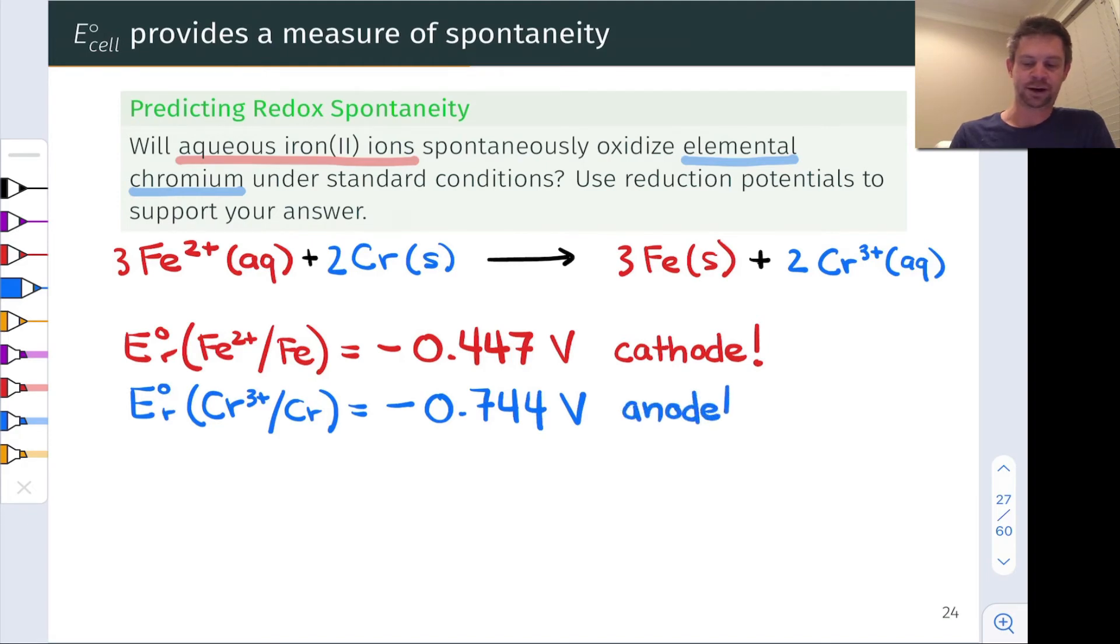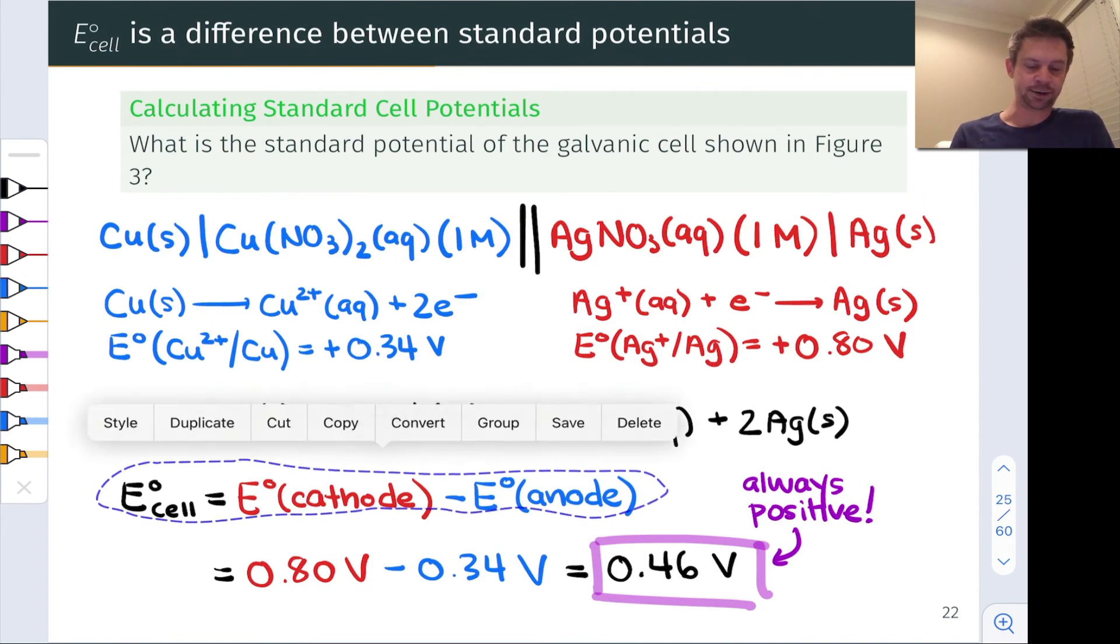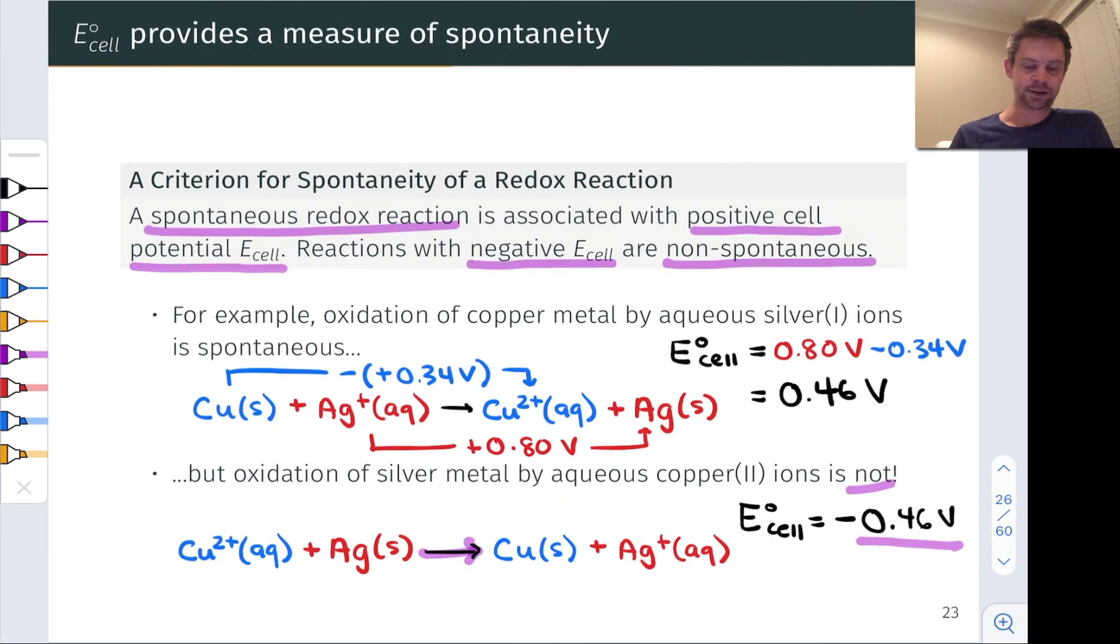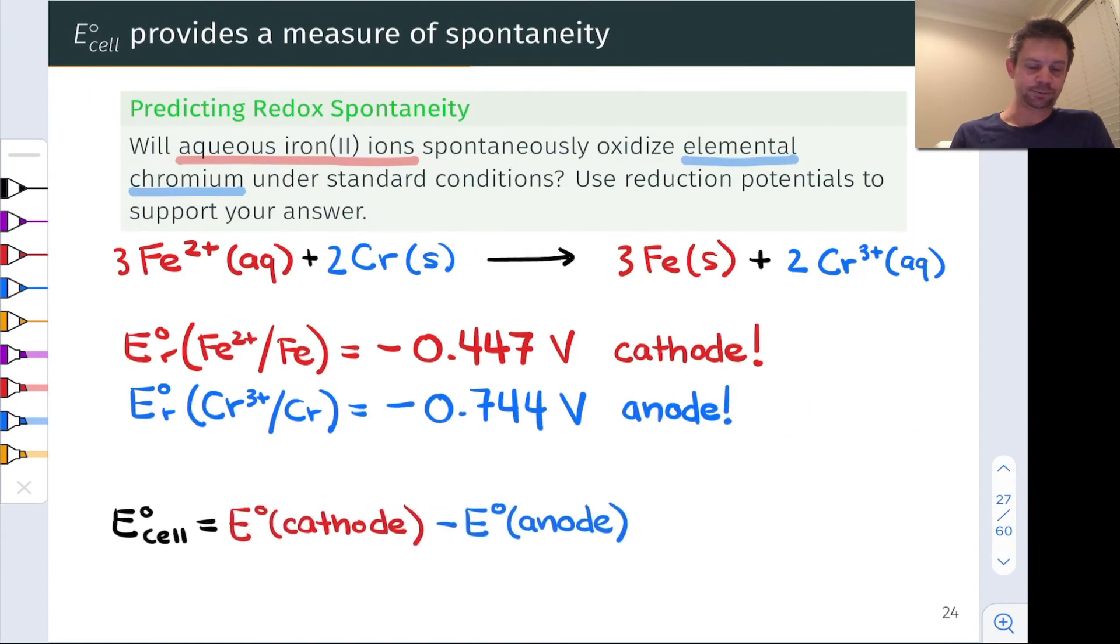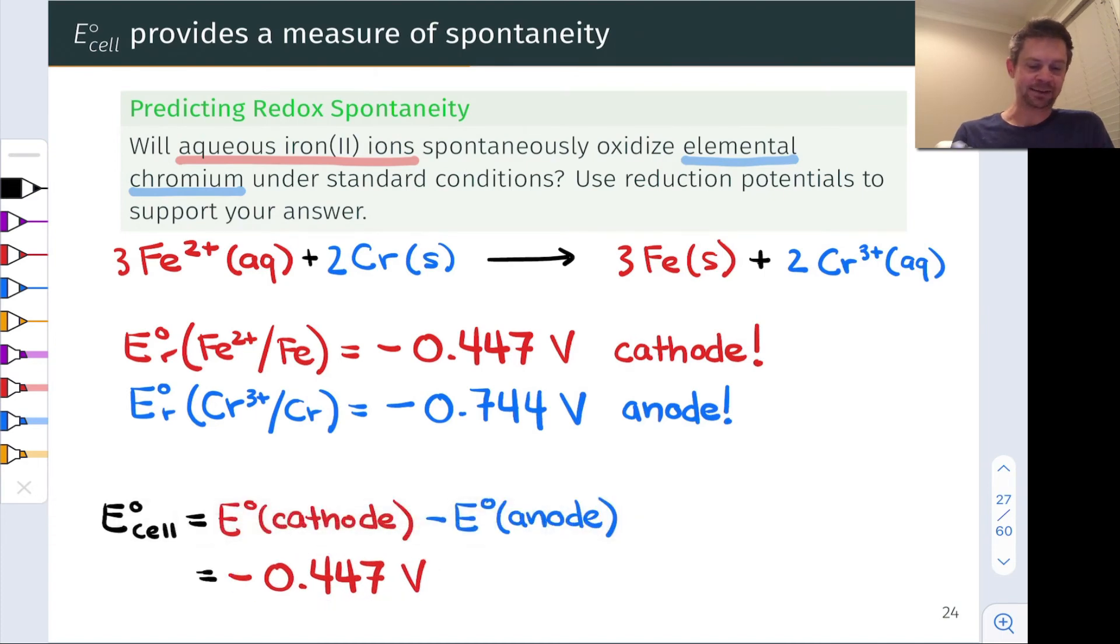And now we can apply the idea that the potential of this hypothetical cell would be the potential of the cathode minus the potential of the anode. And we've already got those values from the table and listed here. So I'm going to copy this down, -0.447 volts for the cathode.